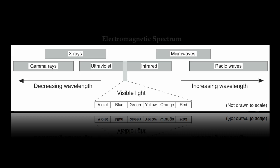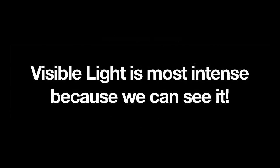The left-hand side shows decreasing wavelength, while the right-hand side shows increasing wavelength. The most important piece of the electromagnetic spectrum is visible light. Why? We can see it. We can see the colors of the rainbow: Roy G. Biv—red, orange, yellow, green, blue, indigo, and violet.